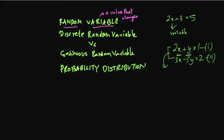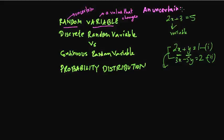Random is one of the most important concepts in probability. Random means something that is uncertain — you don't know what's going to happen. In probability, something we don't know what's going to happen, we call it uncertain. So a random variable is an uncertain value that changes.